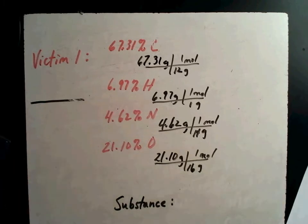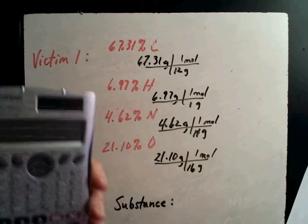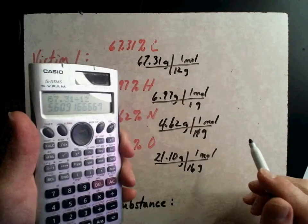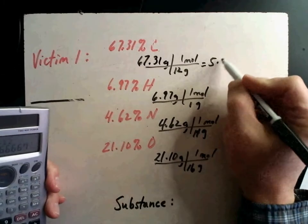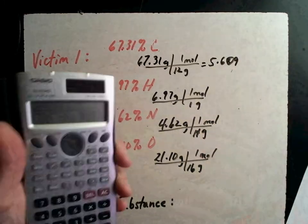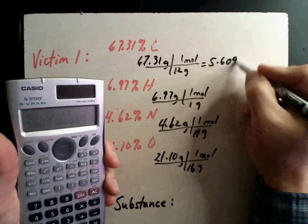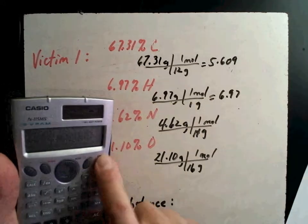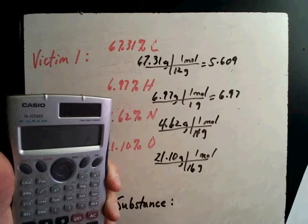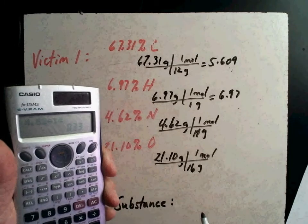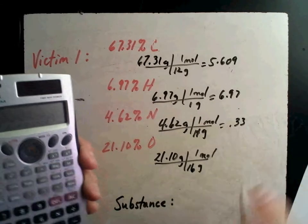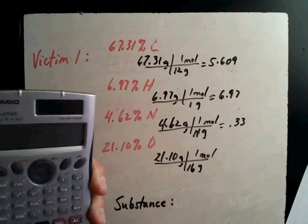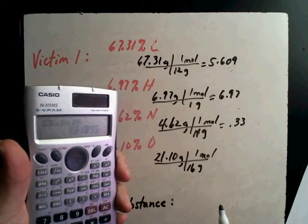Now you may think you know that very quickly. Yes, I do it all the time. And I grab my handy-dandy calculator. 67.31 divided by 12, and I carried a couple of decimals, 5.609. 6.97 divided by 1 is going to be 6.97. So that's easy math. 4.62 divided by 14 is 0.33. And then 21.1 divided by 16 is 1.319.